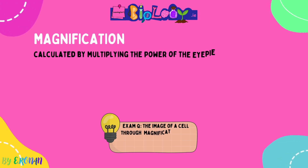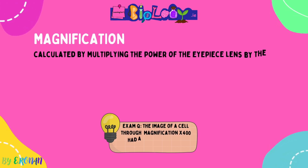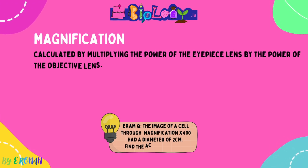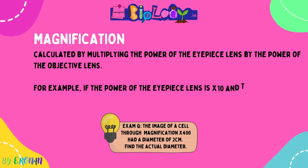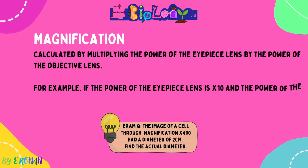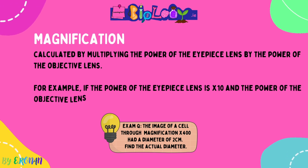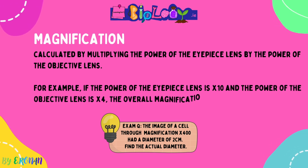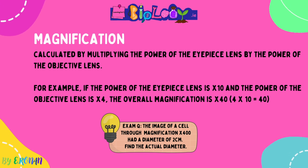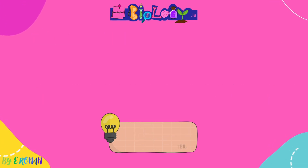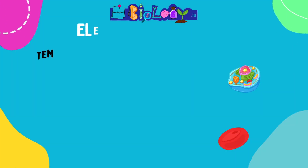Magnification is calculated by multiplying the power of the eyepiece lens by the power of the objective lens you are using. For example, if the power of the eyepiece lens is ×10 and the power of the objective lens is ×4, the overall magnification is ×40 — you multiply them together. There is an exam question for you to try, which is a past paper question.